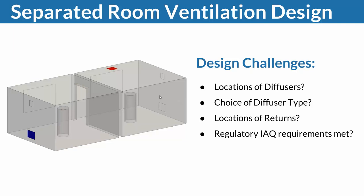First and foremost, where to put our diffusers to ensure enough supply of fresh air without draft risk or thermal comfort problems. What type of diffuser to choose, and where to put the returns. We're going to go through different scenarios — how the room looks with a displacement ventilation strategy, how it looks with a mixing strategy, and we also change the diffuser outlets and return location.